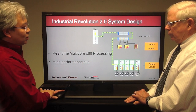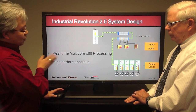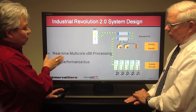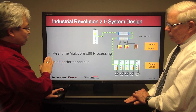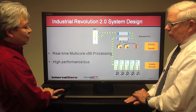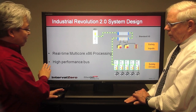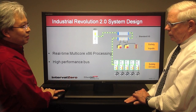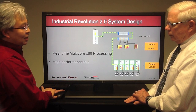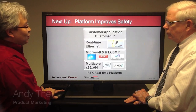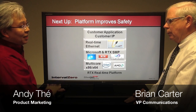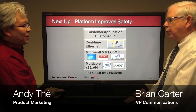In summary, implementing the RTX real-time platform with EtherCAT removes processing limitations by combining Windows and RTX on standard x86 hardware to achieve real-time multi-core x86 processing via symmetric multiprocessing. EtherCAT provides a high-performance, flexible bus that removes the barriers to designing your optimal system. In the next video, we'll talk about how the RTX real-time platform specifically addresses safety. Thanks again Andy. Bye-bye.